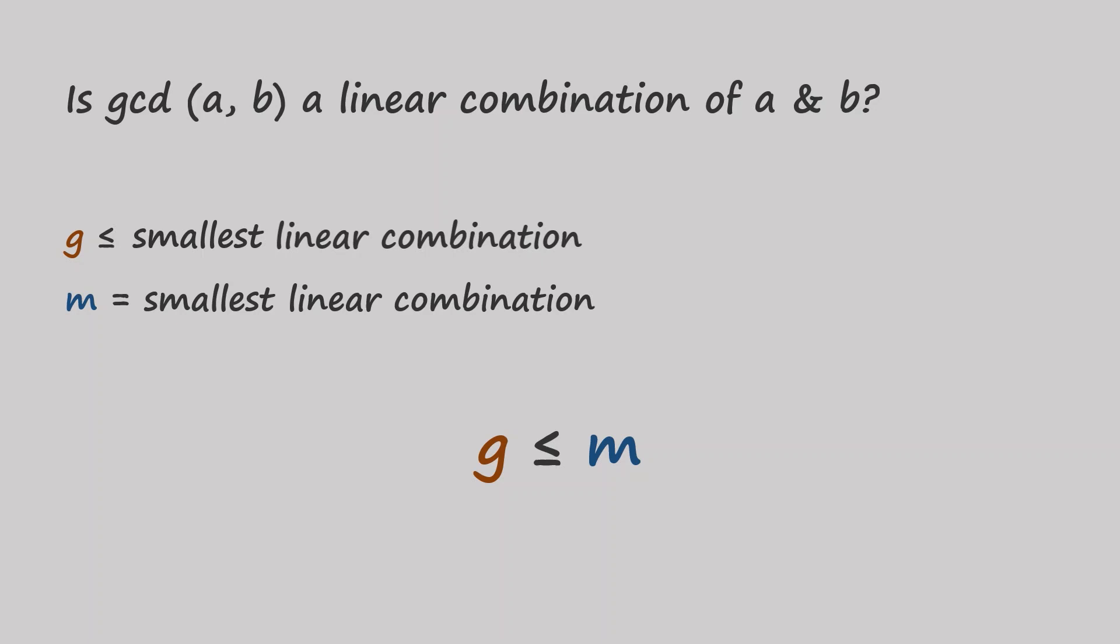So if G is a linear combination of a and b, then it has to be equal to m. Pause the video and think about it for a second, if it doesn't immediately make sense.